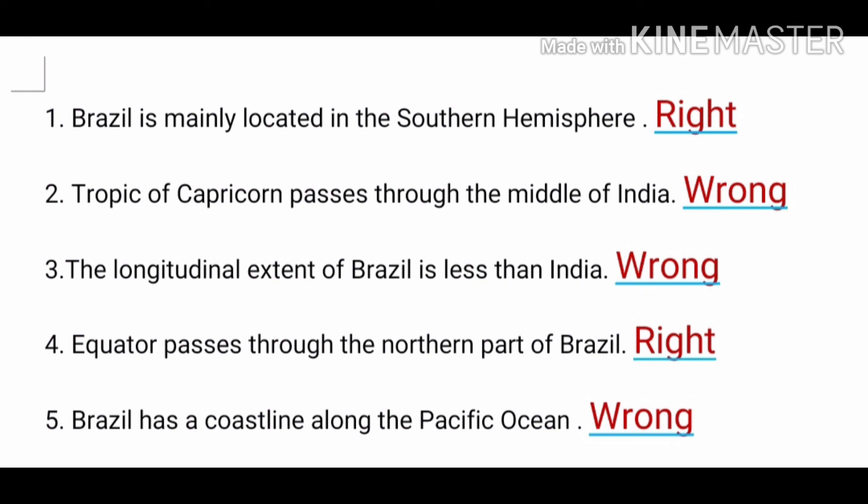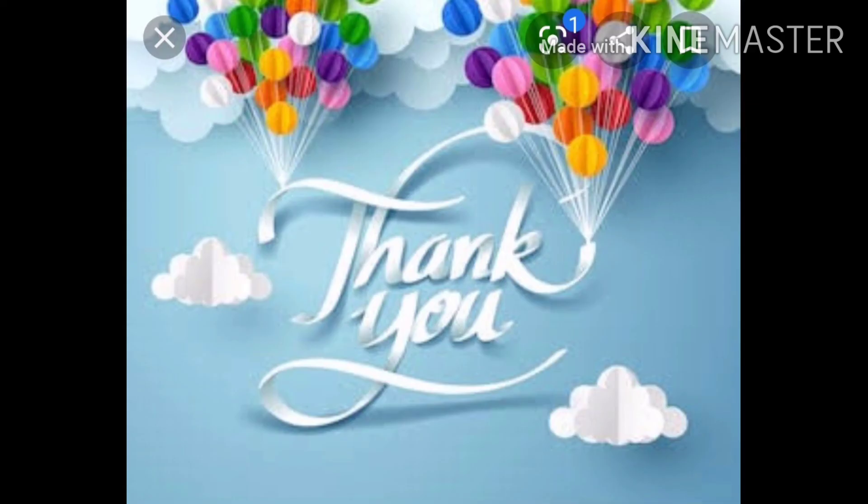Third question — the longitudinal extent of Brazil is less than India. Answer: Wrong, because the longitudinal extent of Brazil is more than India. Fourth question — Equator passes through the northern part of Brazil. Answer: Right. Fifth one — Brazil has a coastline along the Pacific Ocean. Answer: Wrong.